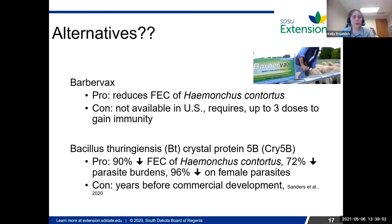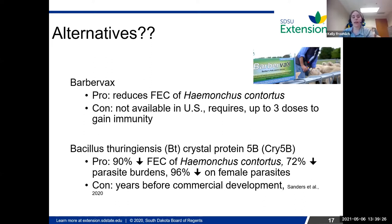There is a product called Barbervax, which is a shot that you give. It doesn't kill worms, but it helps build up immunity to worms so they don't reproduce as much and it reduces fecal egg counts. The problem with this product: it's not available in the U.S. And there's been some discussion on its efficacy because you need up to three doses to gain any sort of immunity.